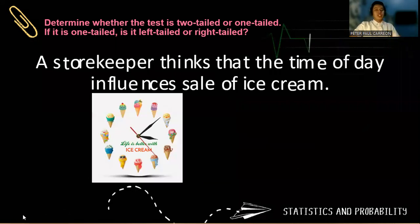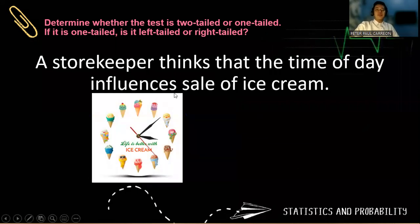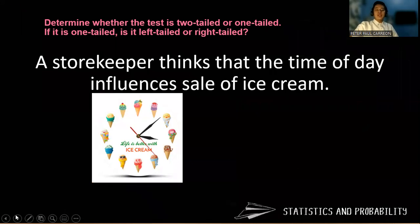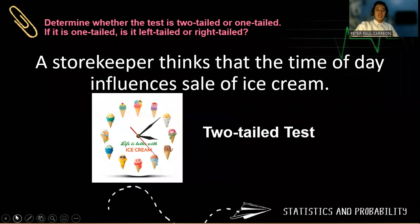Now, a storekeeper thinks that the time of day influences sale of ice cream. Again, the word influences means inequality. So we have a two-tailed test.